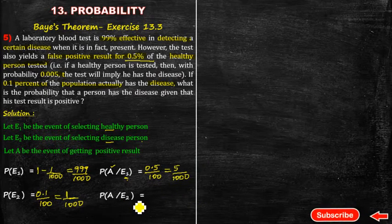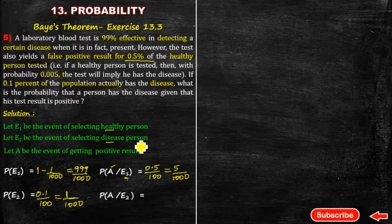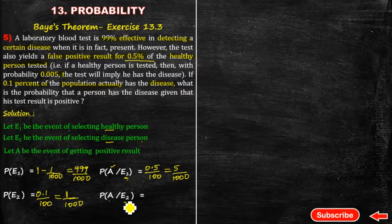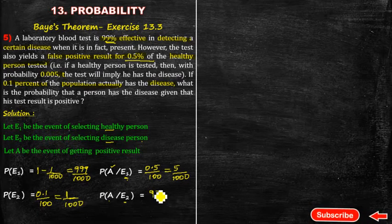Next, the probability of A given E2. E2 means the person is diseased and affected, giving a positive result. The probability is 99%. So, 99 divided by 100.